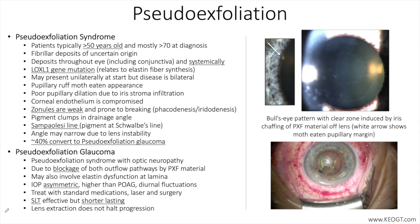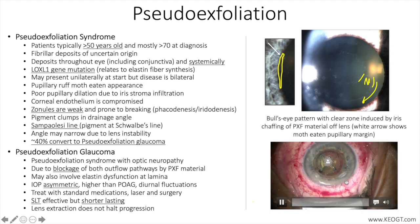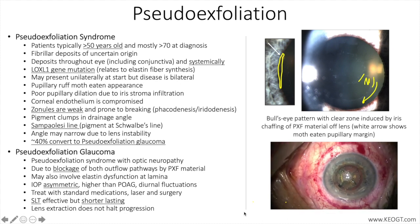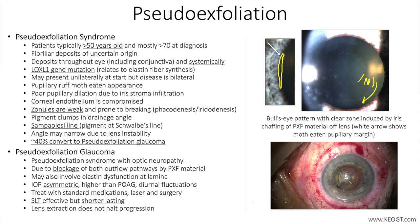Zonular laxity often results in phacodonesis, and you can see the video here. This is the deposit-free zone, and you can see the deposit material here — this is the bullseye pattern. The moth-eaten pattern on the pupillary margin is where light is transmitted more in the translucent area. In the phacodonesis video, when the patient is looking from side to side, you can see these micro-movements where the lens is shimmering back and forth — this is phacodonesis. It would be called pseudophacodonesis if the patient were pseudophakic with the same type of motion.